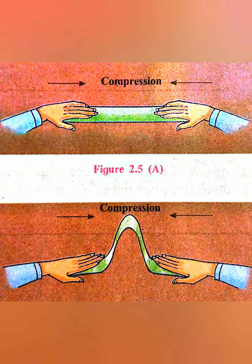In Activity 1, the strip was moved by placing hands on both ends. The work performed on the strip at that time is called compression. Compression means pressure was given on the center of the strip from both ends. As a result, the strip moved and folds are formed. Similarly, due to pressure on the earth's crust, movements are generated and folds are formed.